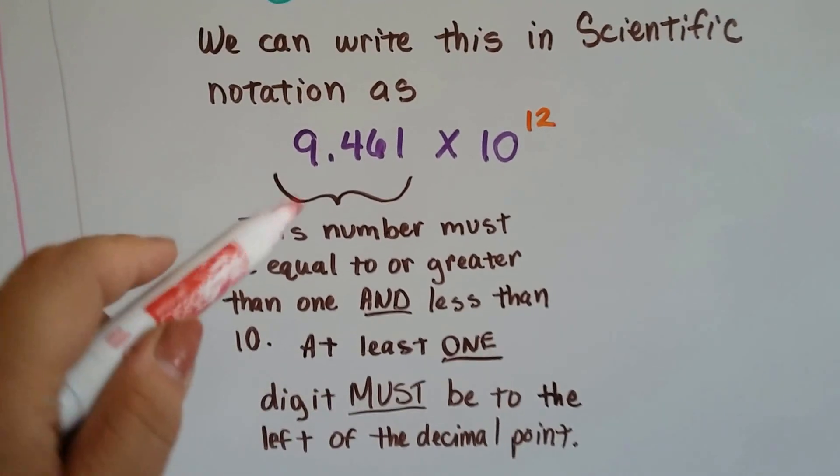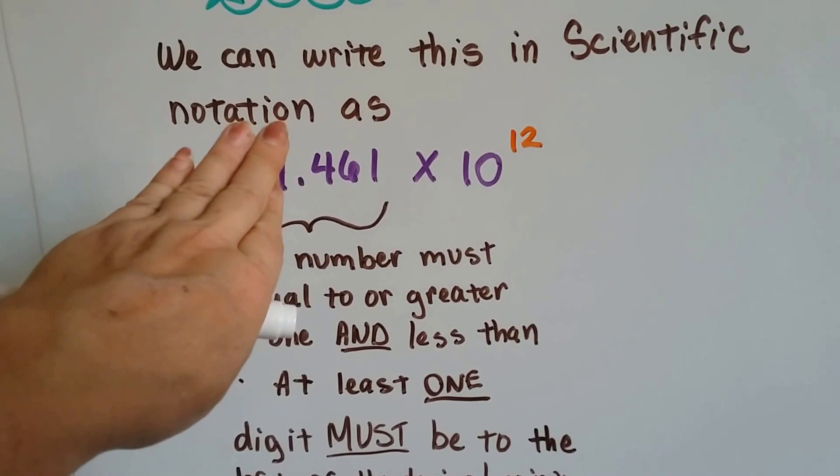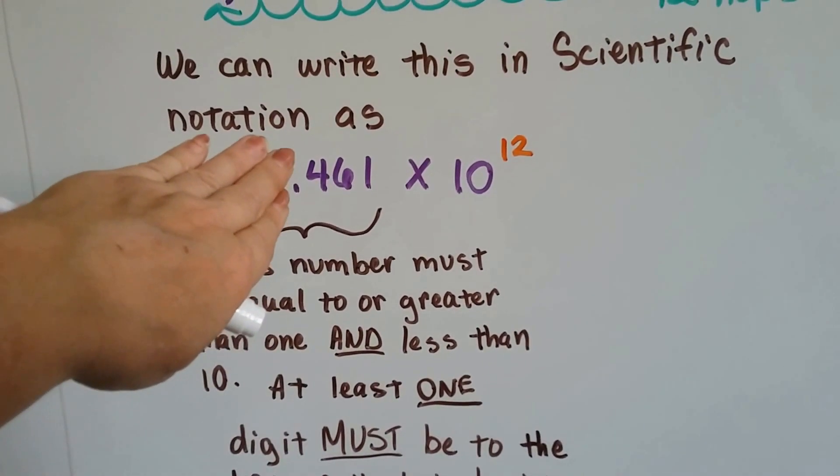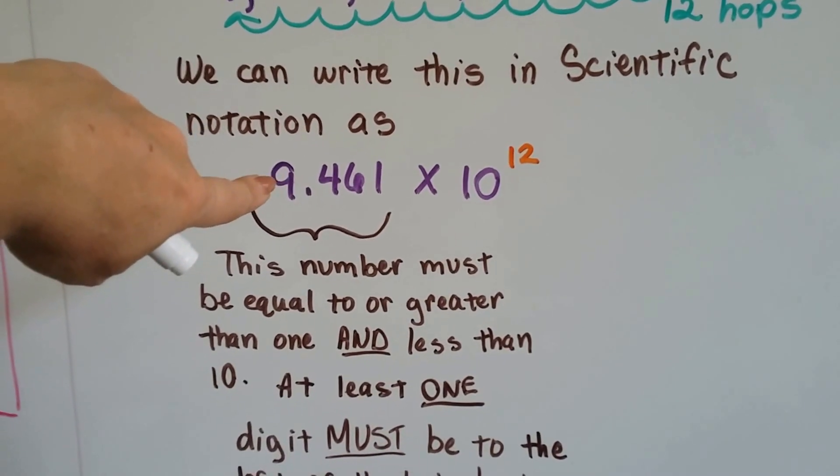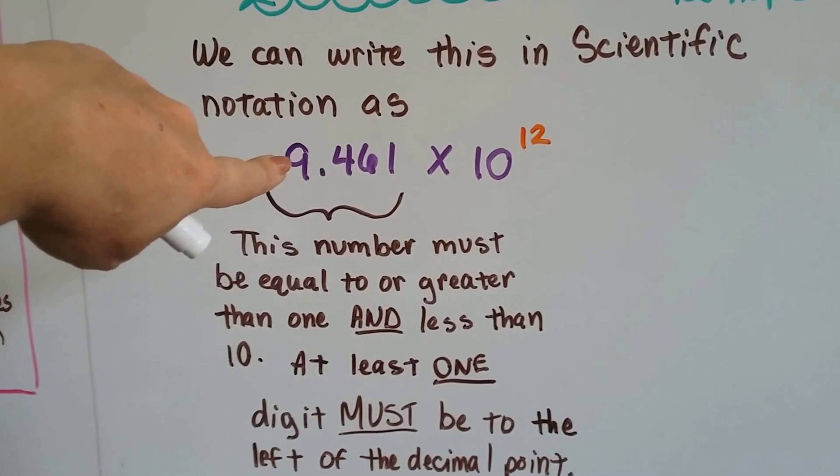The reason it has to be greater than 1 is if there were no number in front of the decimal point, then it would be less than 1. So by having the rule that there has to be a digit in front of the decimal point, that means it's got to be a 1 or bigger.